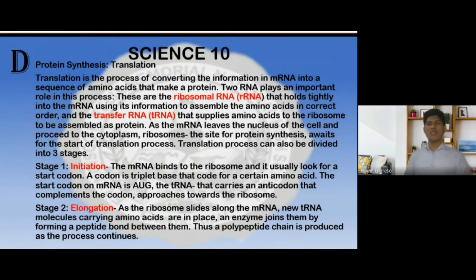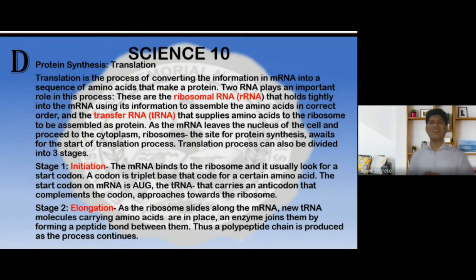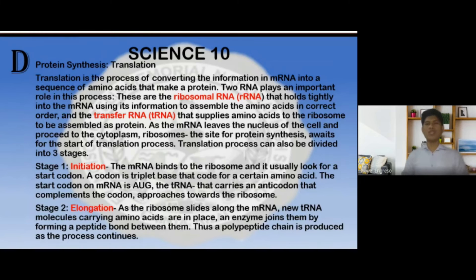As the messenger RNA leaves the nucleus and proceeds to the cytoplasm, the ribosome — the site for protein synthesis — awaits the start of the translation process. Translation can also be divided into three stages. Stage 1 is initiation: the mRNA binds to the ribosome and looks for a start codon. A codon is a triplet base that codes for a certain amino acid. The start codon on mRNA is AUG. The tRNA that carries an anticodon complementary to the codon approaches the ribosome. The second stage is elongation: the ribosome slides along the mRNA, new tRNA molecules carrying amino acids are brought into place, and an enzyme joins them by forming a peptide bond. Thus, a polypeptide chain is produced as the process continues.